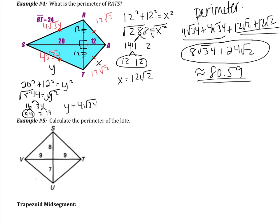Example 5 is similar — calculate the perimeter of the kite. Pause the video and try this one on your own. Good luck.